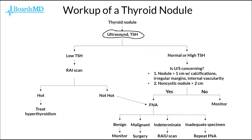Overall, there are really two pathways that get us to a fine needle aspiration or FNA. The first is that we perform an RAI scan and find that the nodule is cold, or we see initially from the ultrasound that the lesion is concerning for malignancy. From that FNA, in most cases we will be able to determine whether or not this thyroid nodule is malignant, though in some cases we will not be able to tell until we have a surgical or biopsy sample.